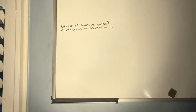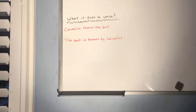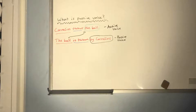Now let's define what the passive voice is by looking at two sentences that give the same information in different ways. The first sentence is 'Cornelius throws the ball,' and the second is 'the ball is thrown by Cornelius.' We'll mark these up: red underline for the subject, blue for the verb, green circle for the direct object, and black circle for a prepositional phrase. The first sentence is in active voice — Cornelius, the subject, is doing an action to a direct object.